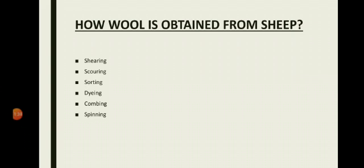The final step is spinning. The long woolen fibers are spun or twisted into thick yarn called wool. This yarn is used for knitting sweaters and other woolen garments. The short woolen fibers are spun into finer yarn and then woven on a loom to make woolen cloths like shawls, pashmina shawls, and so on.